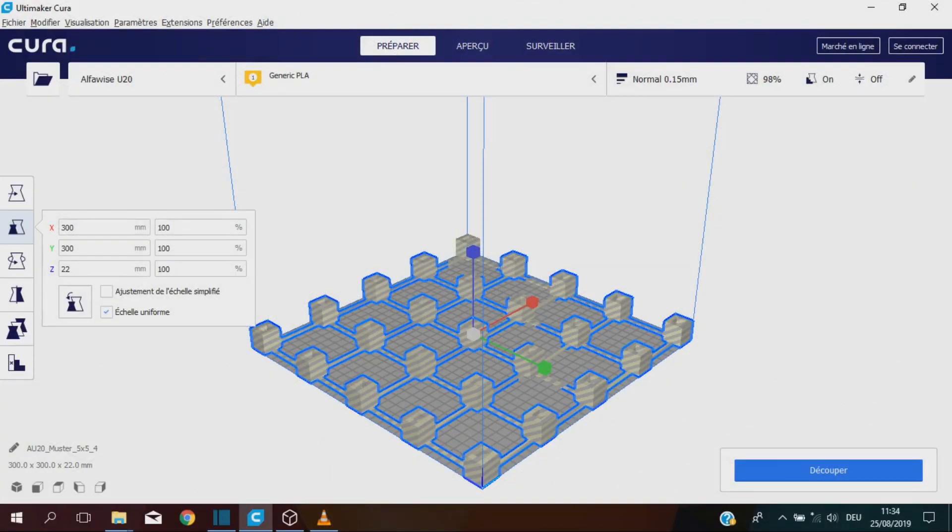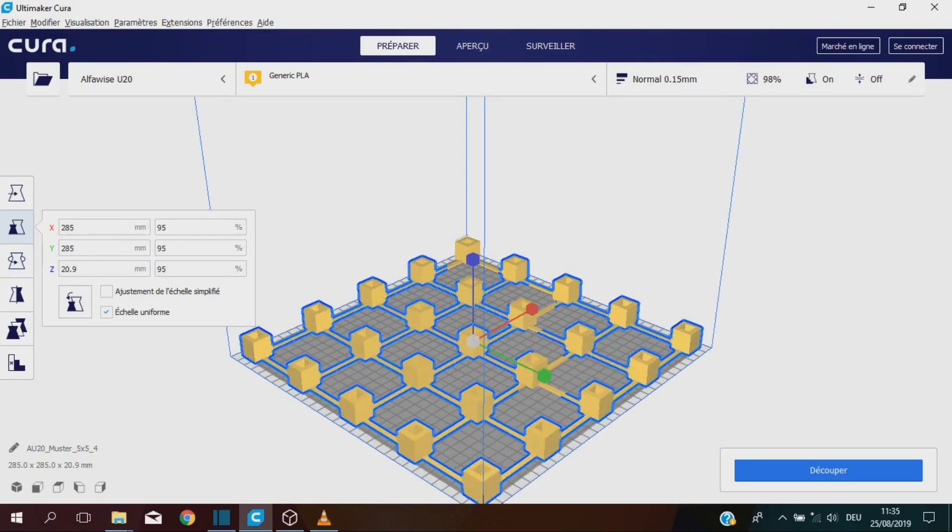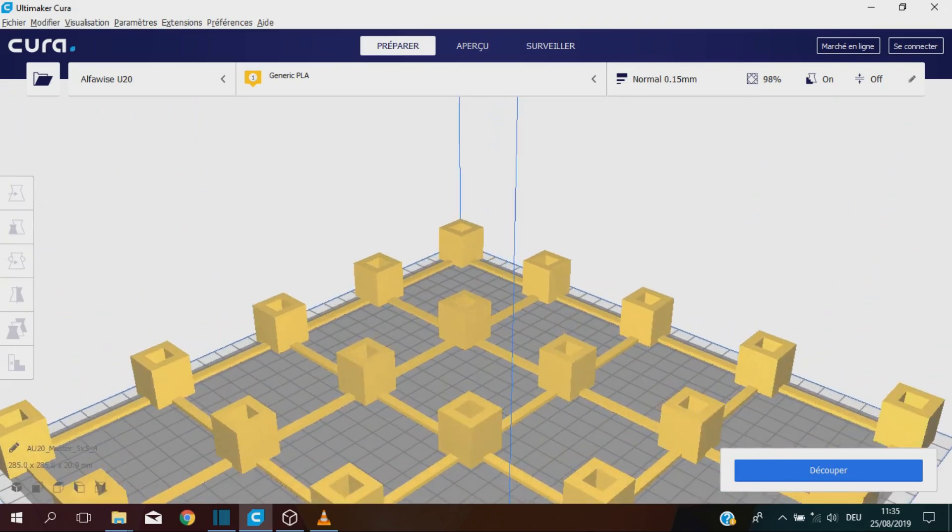First finding is that in spite of the fact that U20 Alfawise printing area is 300 times 300 millimeters, I cannot import my model with those dimensions into Cura software. So I decided to scale the model with factor 0.95 to fit.